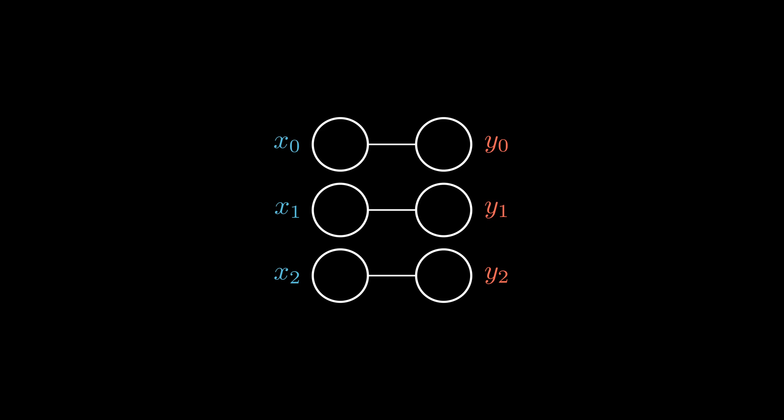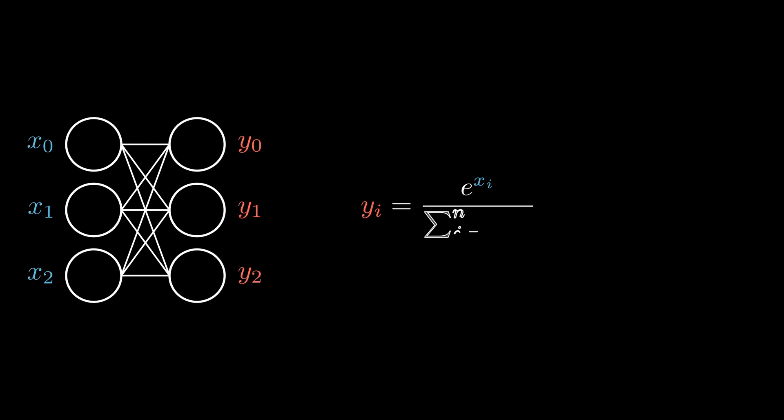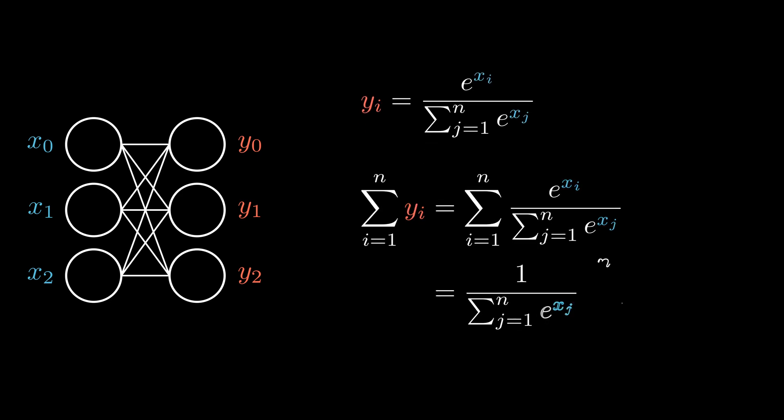However, the softmax activation is a bit different. Each output variable depends on all the input variables. The formula of the softmax activation is shown on the screen. The reason for which it is used in classification problems is that it makes the output similar to a probability distribution. If you sum all the y values, the result is 1.